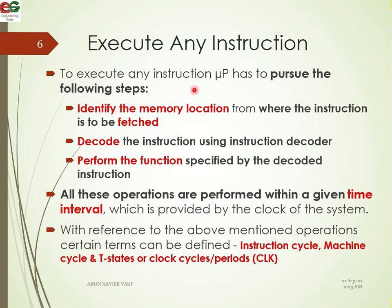To execute an instruction in the microprocessor, the MUP has to pursue some steps. First, identify the memory location from where the instruction is to be fetched. Then we need to decode the instruction using the Instruction Decoder. Then perform the function specified by the decoded instruction, and process the output.